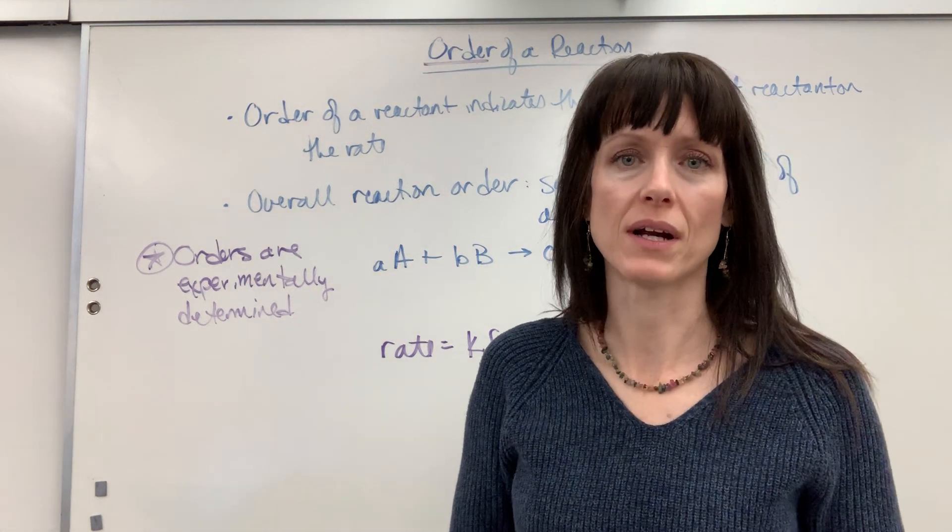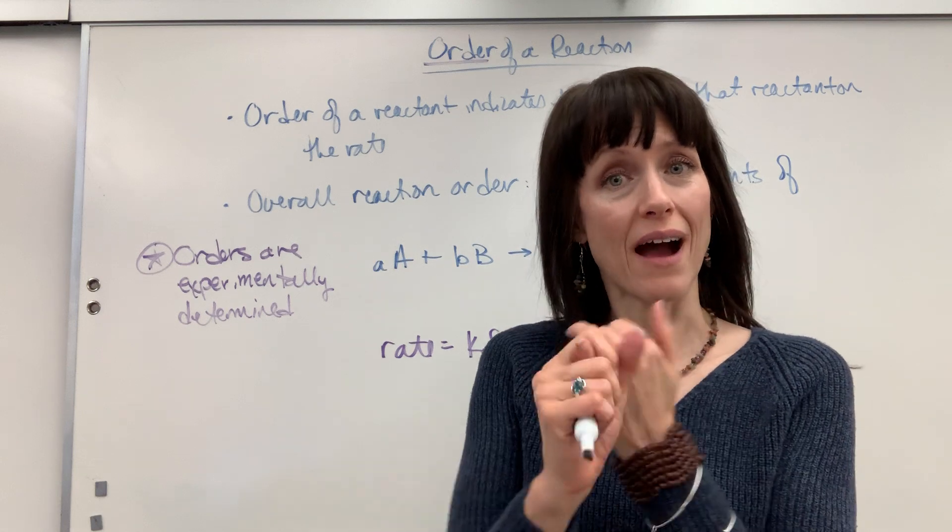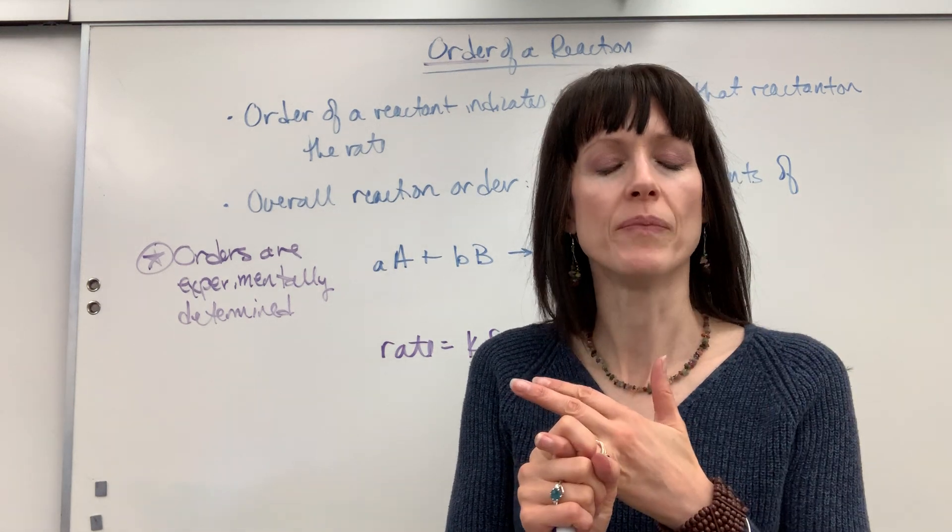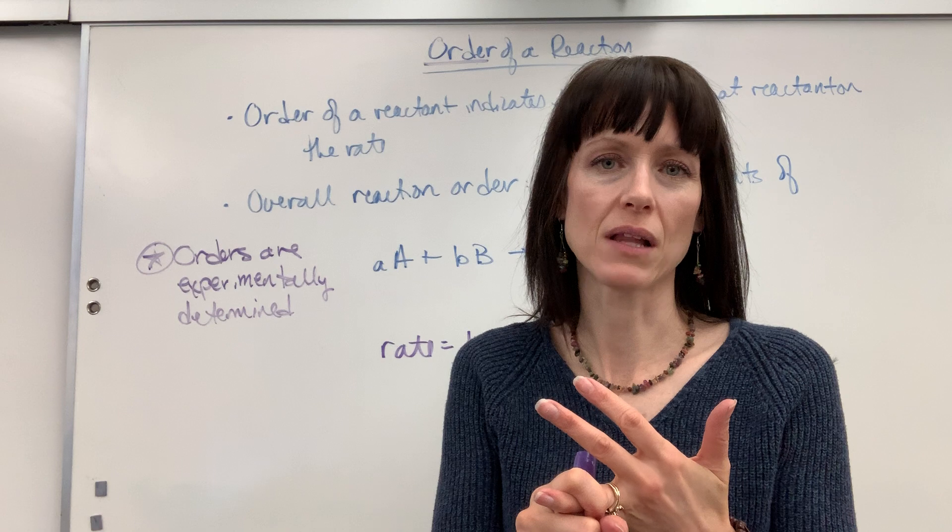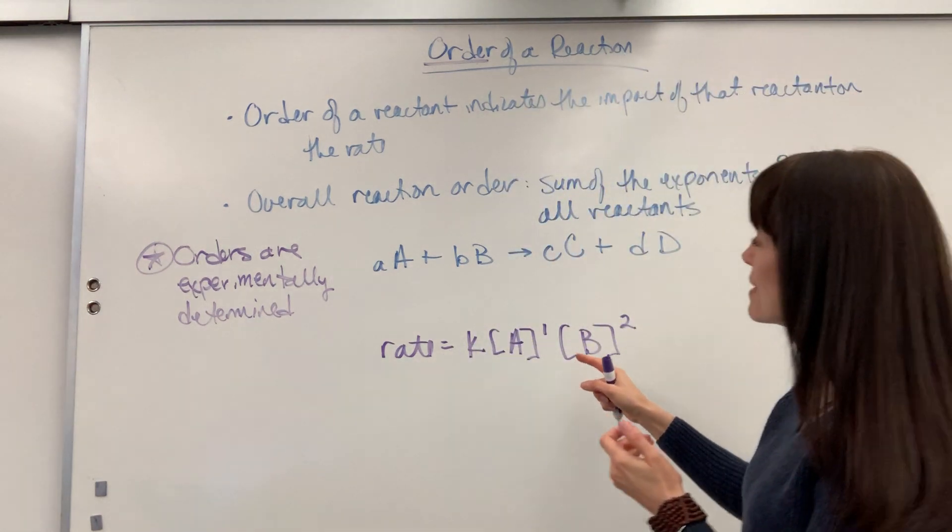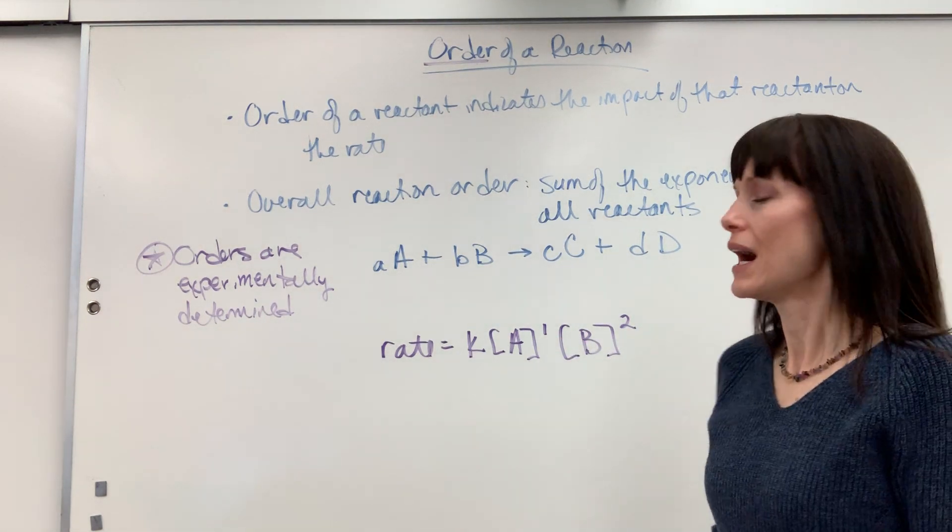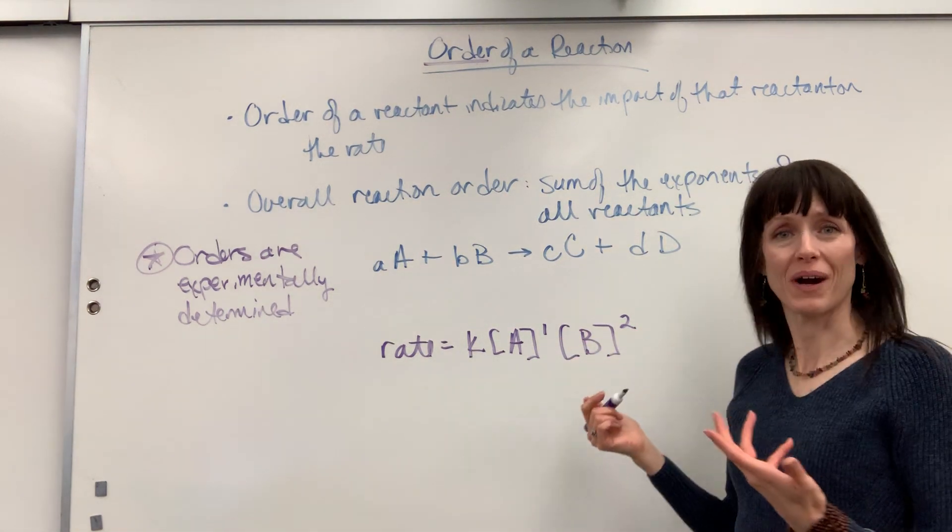Often in homework and on tests, you'll be given a data set. And you can either do math, or you can look at it and do mental math. It's called determining the rate law by inspection. If you have not watched those videos to determine from experiments the orders, watch those two videos. And you can actually figure out what are the orders.